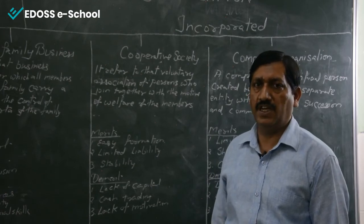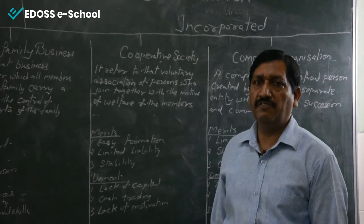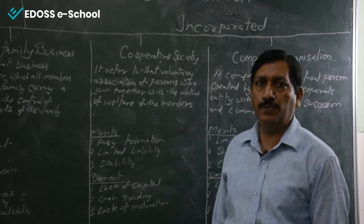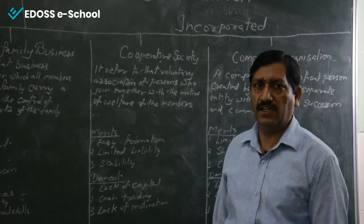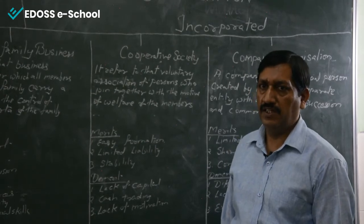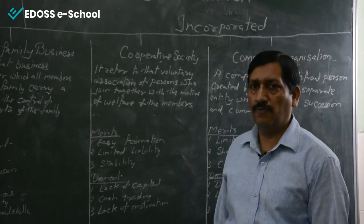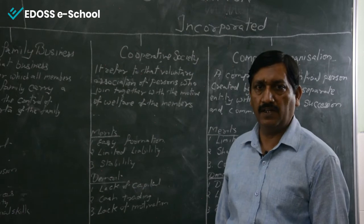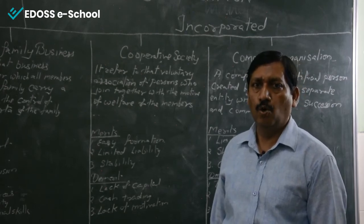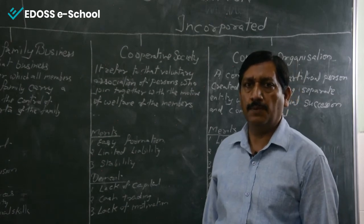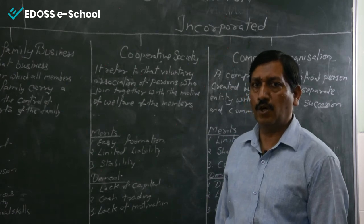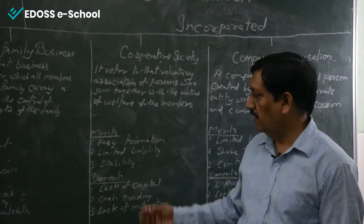Merit: Easy formation — different types of cooperative societies can be formed, such as consumer cooperative, farmer cooperative, and producer cooperative, depending on the type of work. For example, any 10 consumers can join together to open a consumer cooperative. Members get goods at a lower price; goods sold to outsiders include a profit margin. Any remaining profit is partly reinvested and partly distributed to members. Each member has one voting right regardless of capital invested; minimum is 10 members and there is no maximum limit.